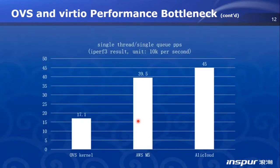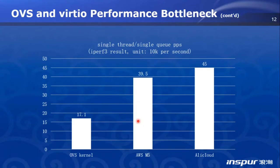Let me show you the best performance that OVS and VirtIO can reach. The highest PPS I can get using iPerf3 is about 170,000 — that is the maximum value single-thread TX can reach. But for an AWS M5 instance, it can reach 395,000. AliCloud ECS can reach 450,000. AliCloud also uses a SmartNIC developed by Alibaba to do hardware offload.